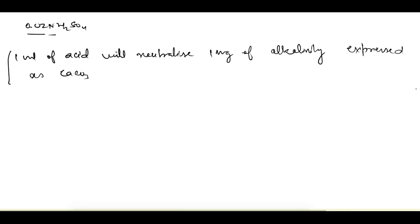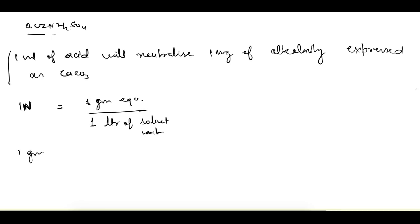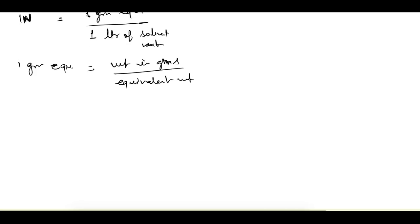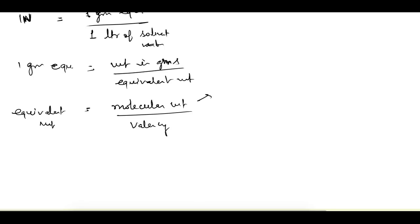A normal solution means you take one gram equivalent of something and dissolve it in one liter of solvent (water), which makes a 1N solution. One gram equivalent is defined as weight in grams divided by equivalent weight. Equivalent weight is equal to molecular weight divided by valency, where molecular weight is the weight of one mole of molecules for that particular compound or element.